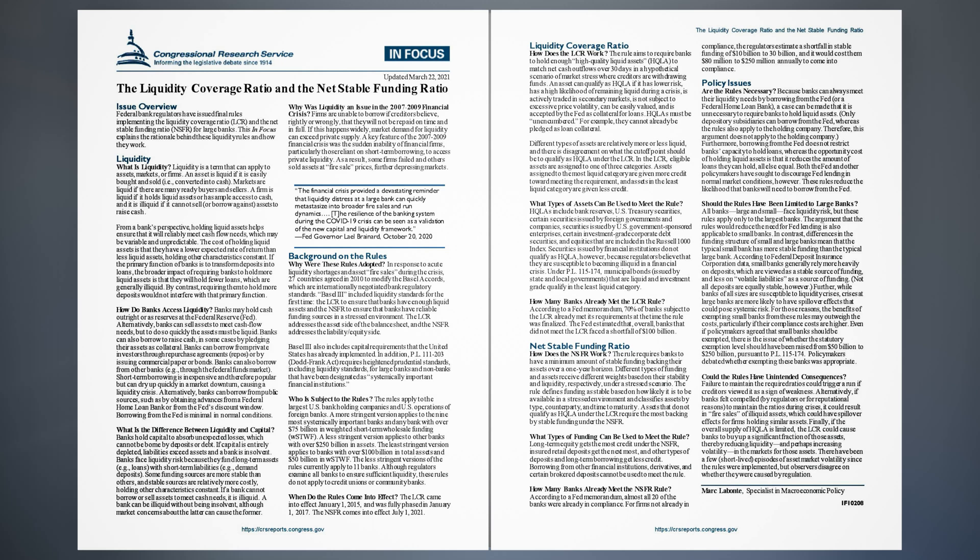How do banks access liquidity? Banks may hold cash outright or as reserves at the Federal Reserve (Fed). Alternatively, banks can sell assets to meet cash flow needs, but to do so quickly the assets must be liquid. Banks can also borrow to raise cash, in some cases by pledging their assets as collateral. Banks can borrow from private investors through repurchase agreements (repos), or by issuing commercial paper or bonds. Banks can also borrow from other banks, for example through the federal funds market.